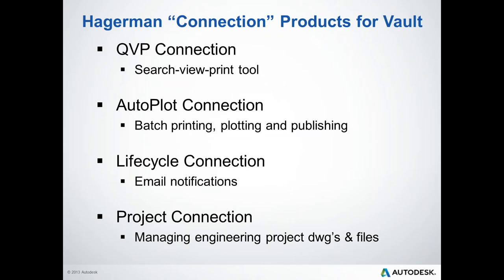Our Connection product line has been around for many years, with some new products added as well. QVP Connection actually predates Vault — it's an enterprise, super easy to use, very inexpensive search/view/print tool for people in manufacturing, sales, customer service, and executive management. AutoPlot Connection is for batch printing, plotting, and publishing. Life Cycle Connection is what we'll delve into today. Project Connection is designed mostly for large plant and process companies managing engineering project drawings and files.